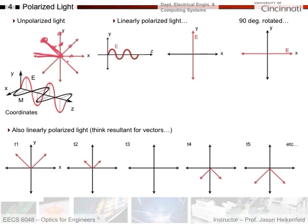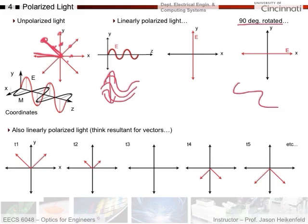Now, linearly polarized light. For polarized light, all the electric field will be in one direction. In this case we have it just in the x direction. This would be linearly polarized light where all the photons have their E field only in the y direction, and you could have a bunch of waves moving forward all in the y direction. You could also have it 90 degrees rotated where all the E fields are in the x direction instead, oscillating that way, with peaks and troughs in phase.